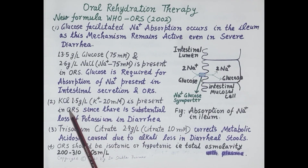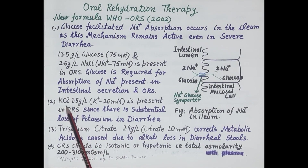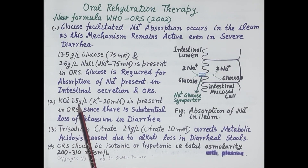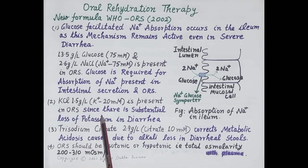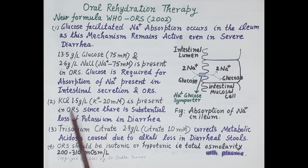The next component of ORS is potassium chloride. 1.5 g of potassium chloride is dissolved per liter of water. There is substantial loss of potassium in diarrhea, and therefore potassium chloride is added to the ORS.